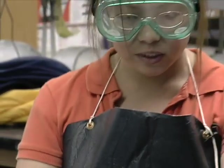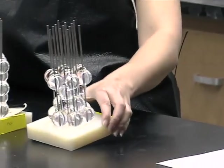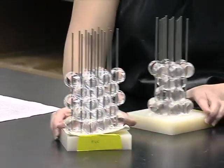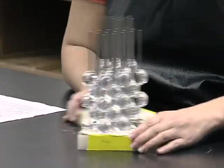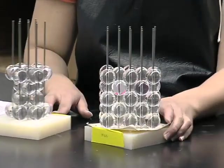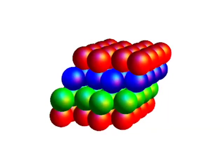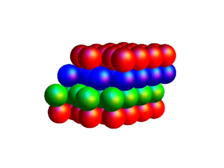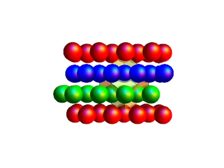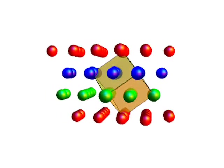If you tilt this CCP at a 45-degree angle, you'll be able to derive a face-centered cubic. It's basically the same structure except viewed at a 45-degree angle, which you'll see in the animation.